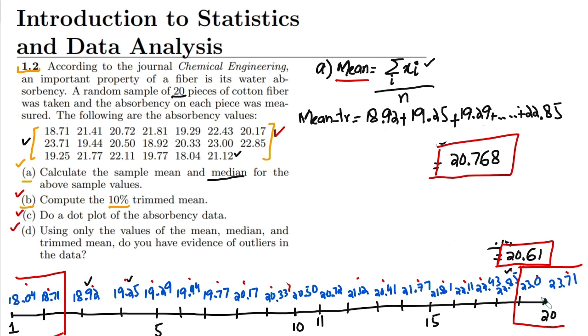The remaining data points we have are 16. The summation is 331.89 divided by 16, and the trimmed mean is 20.743.